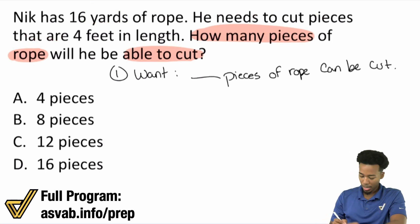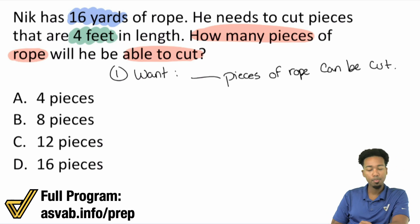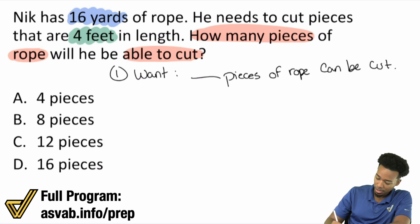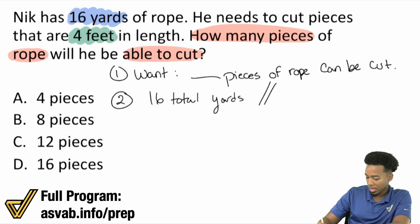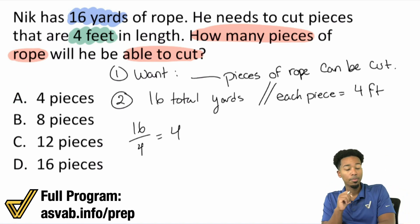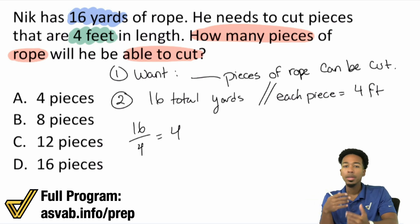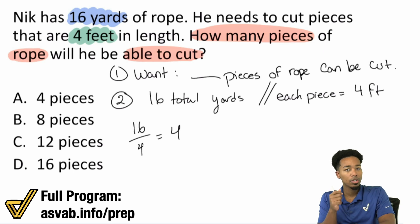I notice that we have 16 total yards and each piece needs to be 4 feet — and I see a problem. Notice how we have yards and feet. If you immediately took the 16 total yards and each piece equals 4 feet, and said 16 divided by 4 equals 4, that's completely wrong. Notice how we have different units: yards for the total length of the rope, and 4 feet for each piece. You can't do that. If you divide that, you're not going to get the number of pieces. You have to use the same units.